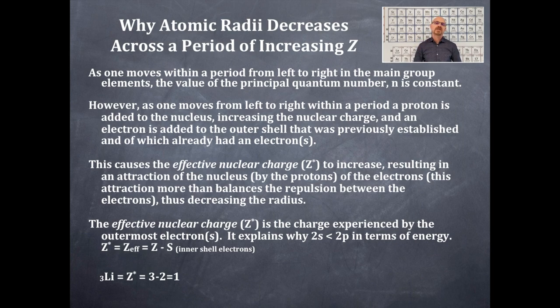For lithium, Z* equals 3 minus 2—the atomic number is 3 and there are 2 core electrons, so Z effective is 1. For beryllium, Z* equals 4 minus 2, giving a Z* of 2. For boron, the atomic number is 5 minus the core electrons 2, giving a Z* of 3.